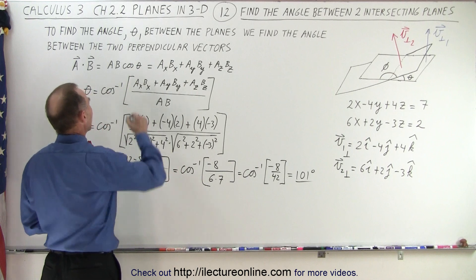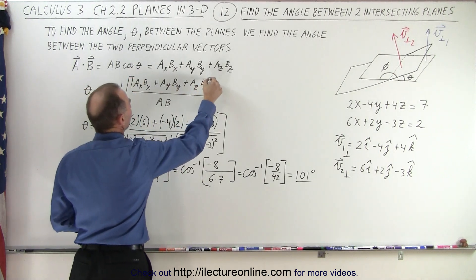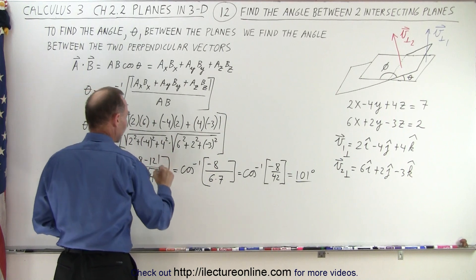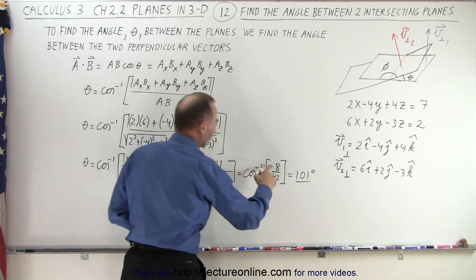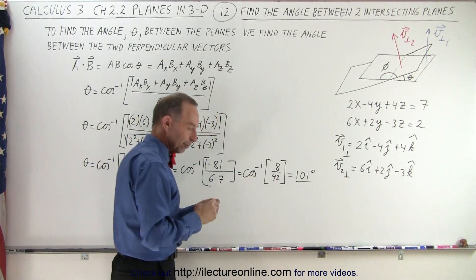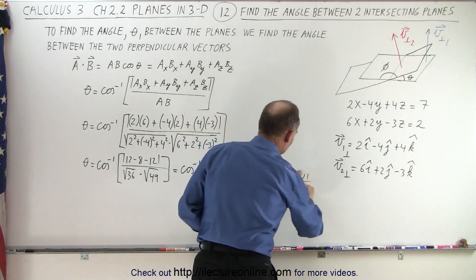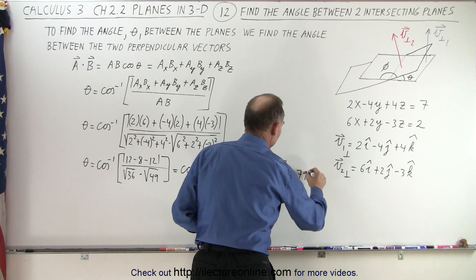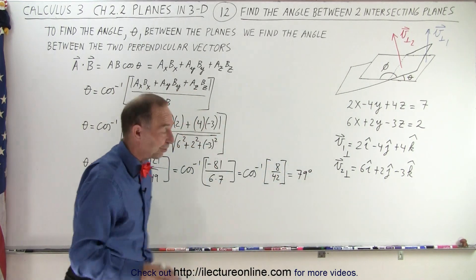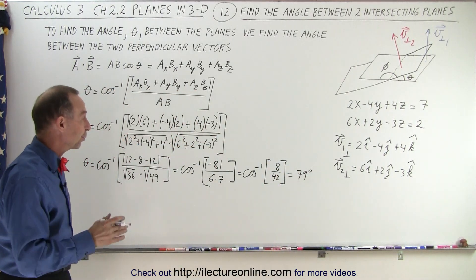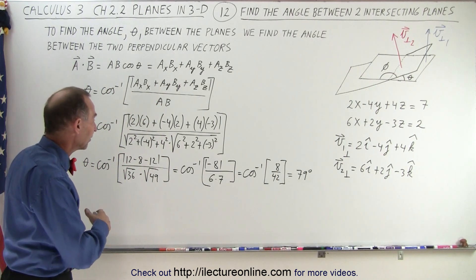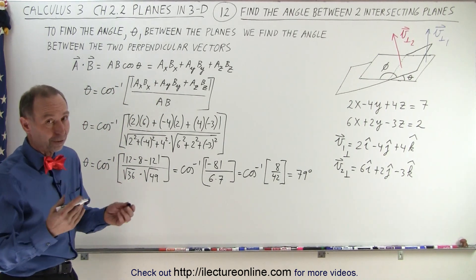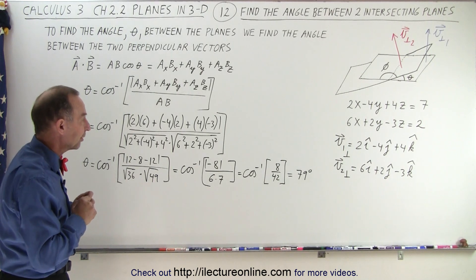So the best way to remedy that is simply say, to make sure we get the acute angle, we're going to put absolute value signs around this, and so we get a positive 8 over 42, and then when we calculate the angle we end up actually with 79 degrees, 180 minus 101. And so that's the best way to ensure that we got the acute angle, rather than either one of the angles, and then try to figure out what to do with the result of that.